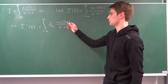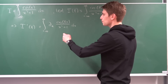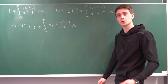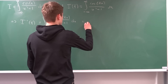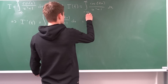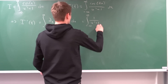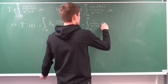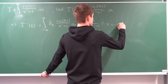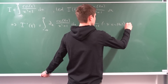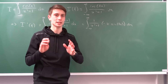We differentiate the function in terms of t inside the integral. Differentiating cosine gives us minus sine, so this becomes the integral from minus infinity to infinity of 1 over (x² + 1) times minus x·sine(t·x) dx. We can bring the minus to the outside.